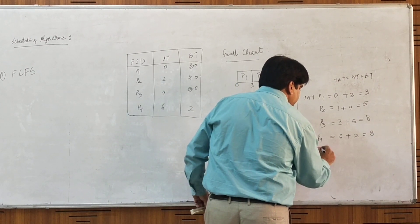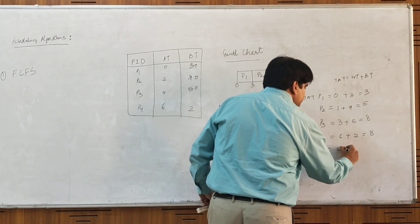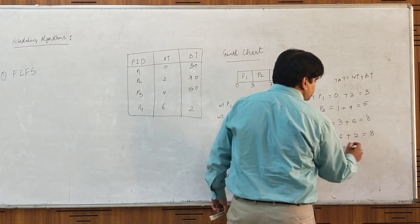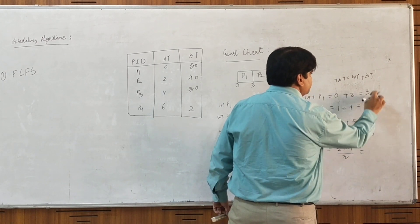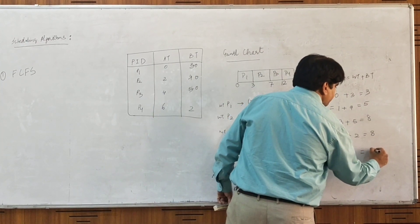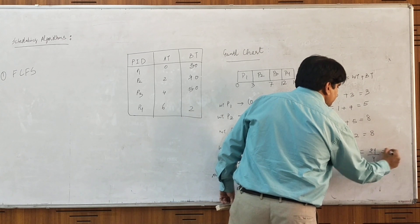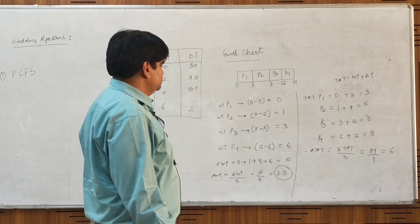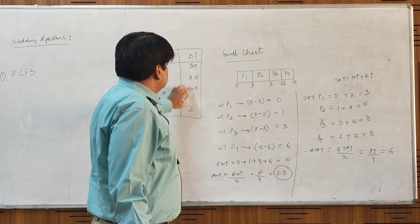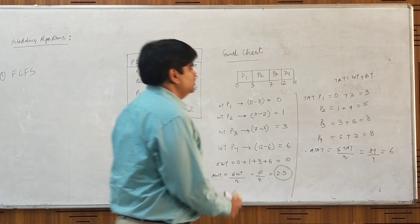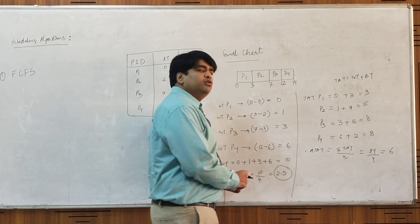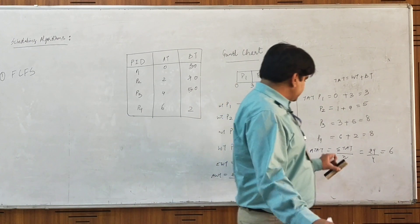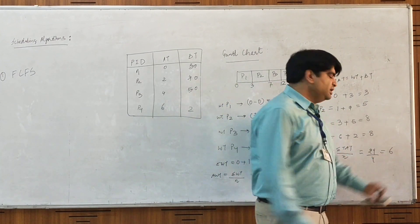The average turnaround time is total turnaround time divided by the number of processes. Total turnaround time: 3 + 5 + 8 + 8 = 24, divided by 4, which comes out to be 6. So average waiting time is 2.5 seconds and average turnaround time is 6 seconds.